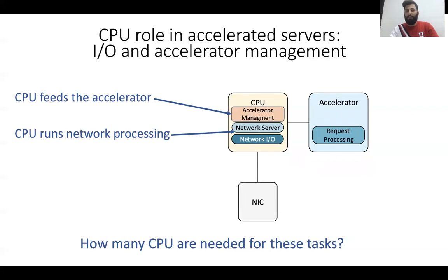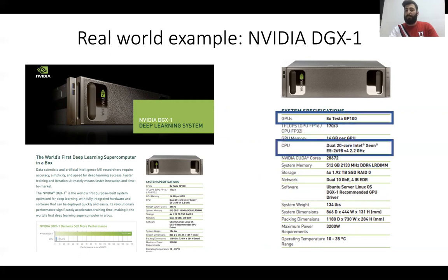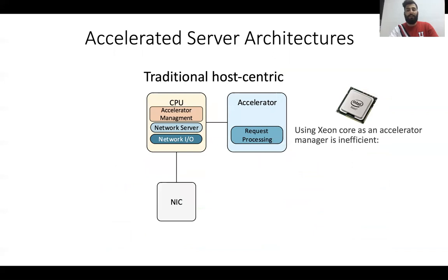To answer this question, I will show a real-world example: the NVIDIA DGX1 server, which is the first server used for AI purposes. In this server there are eight Tesla GPU cards, but in order to drive these accelerators they use 40 CPU Xeon cores, which is a lot. Therefore, we claim that using Xeon cores as an accelerator manager is inefficient, because when we add more accelerators to the system the CPU becomes the bottleneck, requiring more CPU cores, which costs money and power consumption.